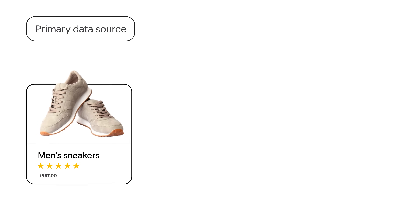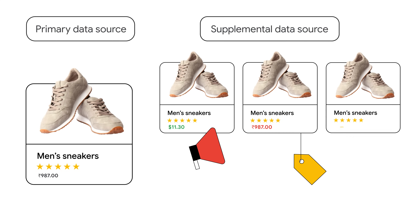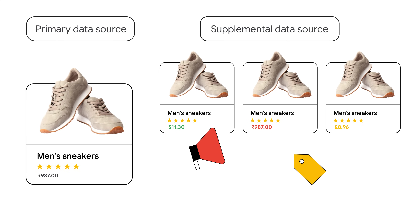Think of your primary data source as your core product information, while supplemental data sources add layers of specific details. Using supplemental data sources, you can easily update information, manage complex scenarios, and optimize your listings without constantly changing your core product data source.